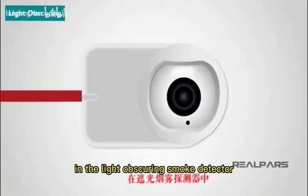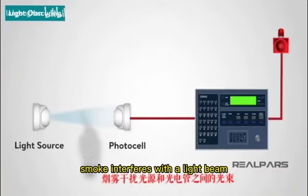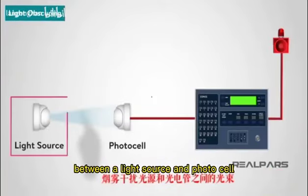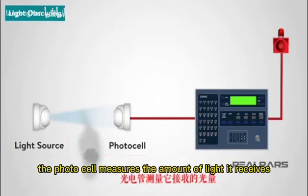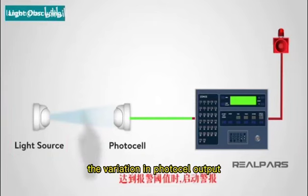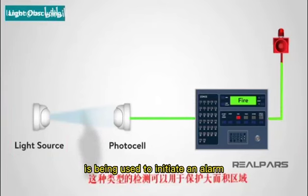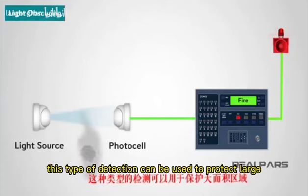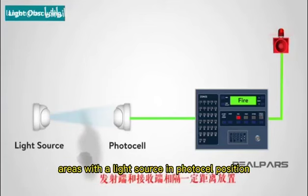In the light obscuring smoke detector, smoke interferes with a light beam between a light source and photocell. The photocell measures the amount of light it receives. The variation in photocell output is being used to initiate an alarm. This type of detection can be used to protect large areas, with a light source and photocell positioned some distance apart.